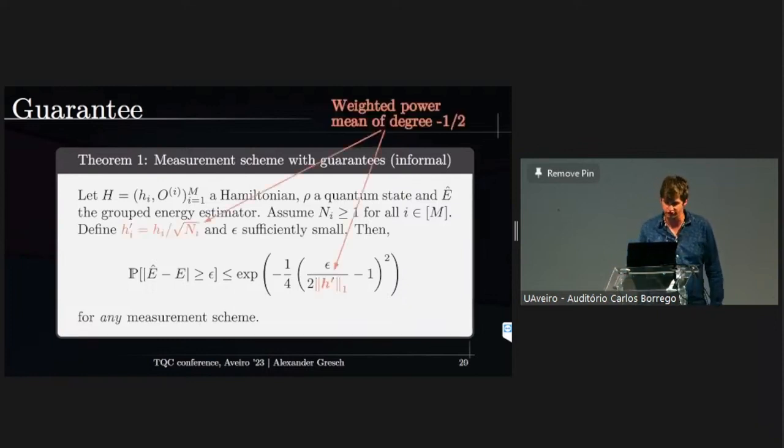And this holds for any measurement scheme. And moreover, what you see here is you find this one norm of this vector H prime, and we can actually relate this to a weighted power mean of degree minus one-half of this vector here.